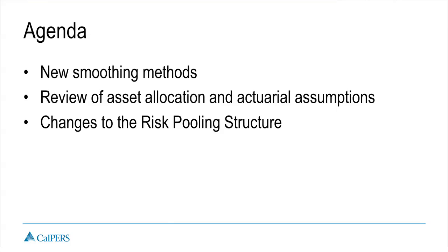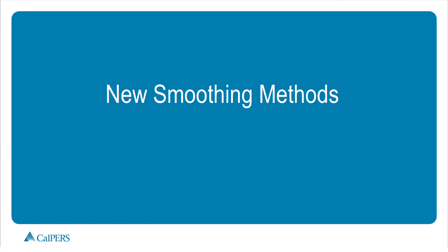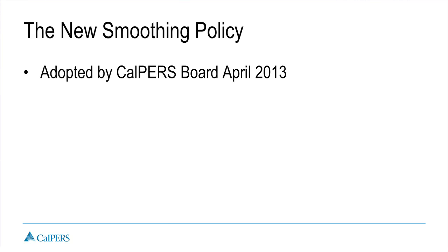That last item will not affect any non-pooled plans. So let's first talk about the new smoothing methods. In April of 2013, the CalPERS board adopted a new smoothing policy. A smoothing policy governs how to recoup your plan's unfunded liability — or use your surplus, if you are one of the fortunate plans still existing with a surplus today. It's also a tool that actuaries use to reduce volatility in your employer rate. The old policy did a great job reducing volatility, but did not do well in lowering your unfunded liability from year to year.